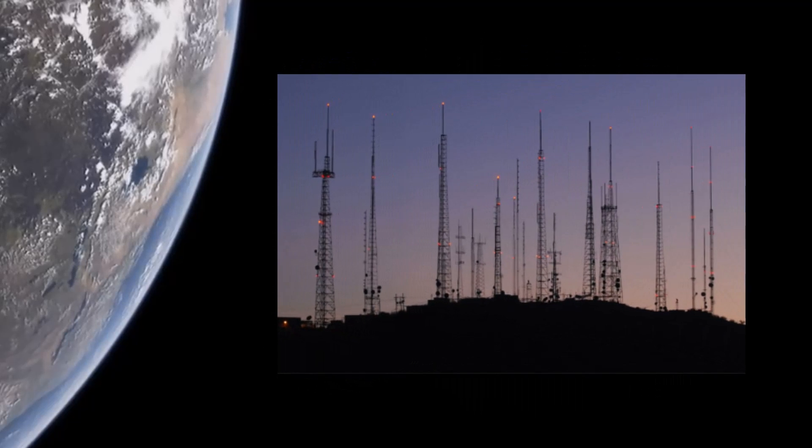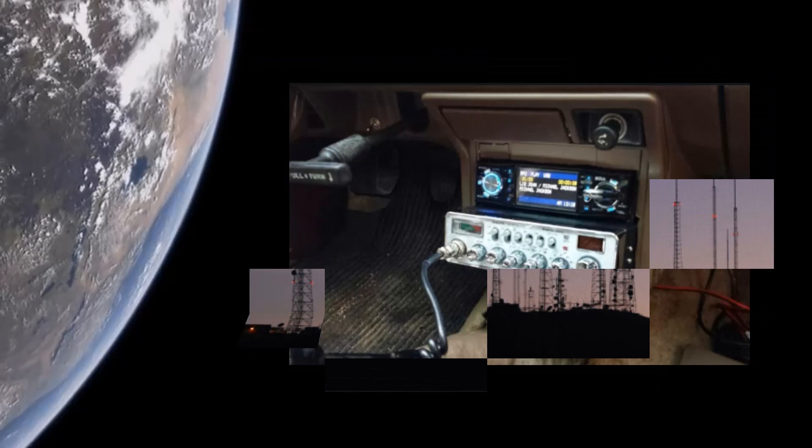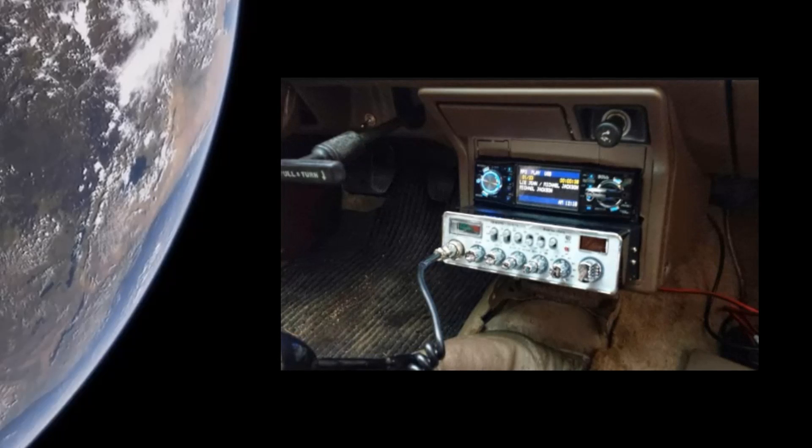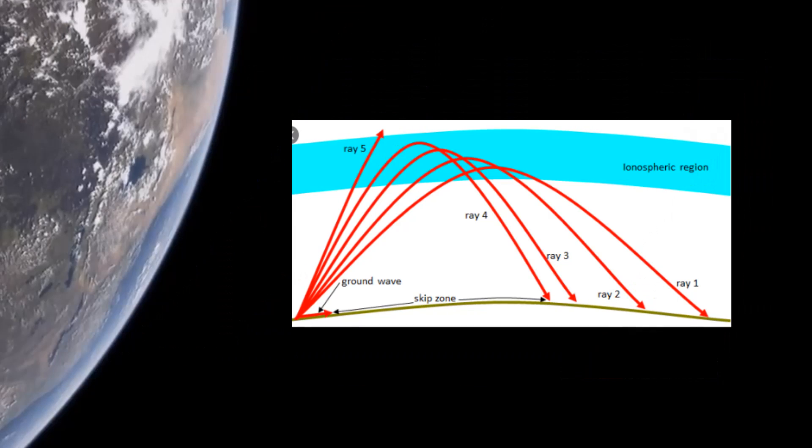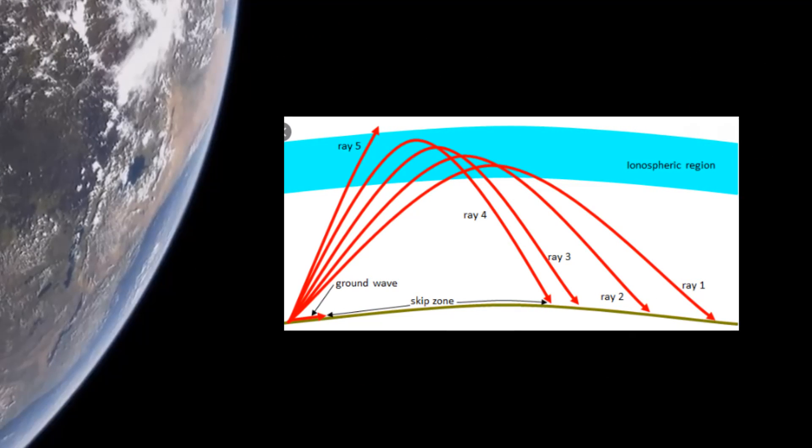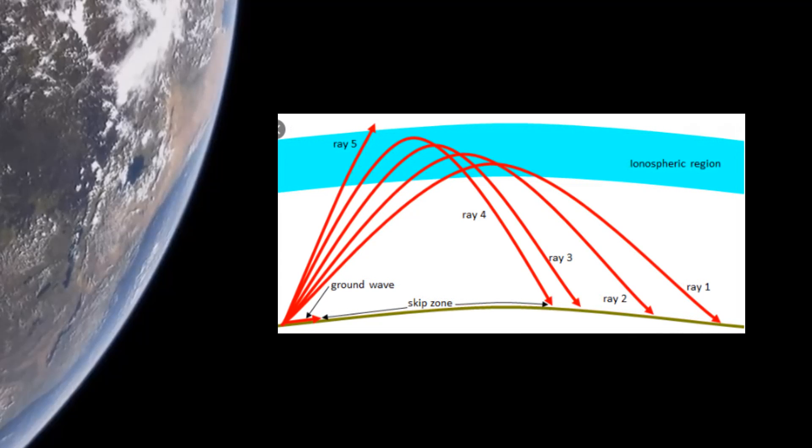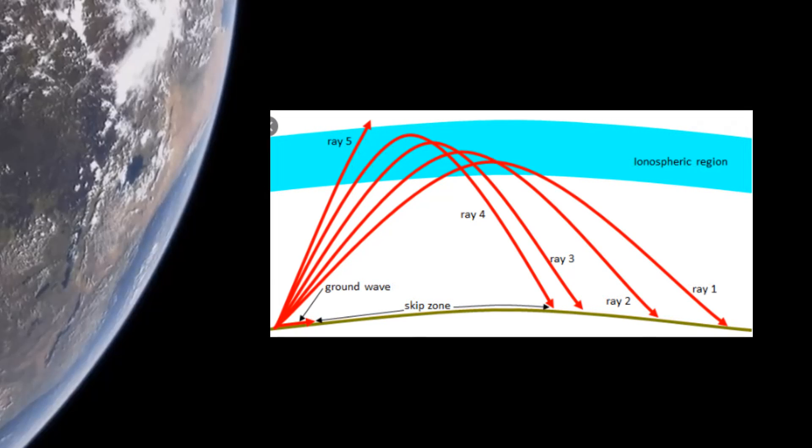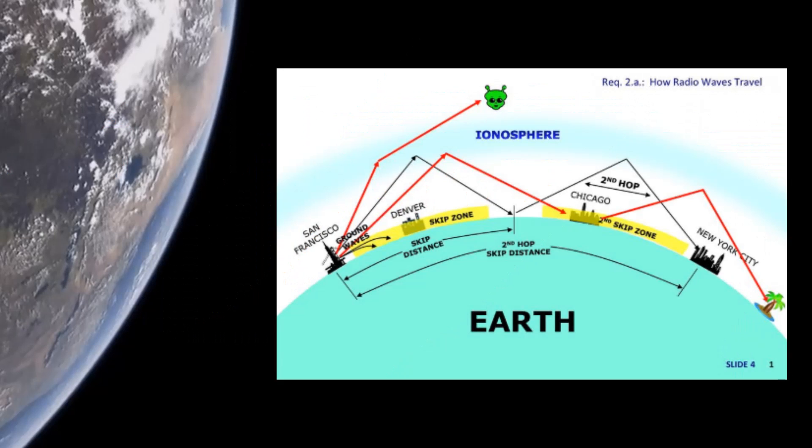Everybody is familiar with AM radio stations and how you can pick up certain things at night versus the day. Anybody familiar with CB radio and the 27 megahertz band knows that there are conditions called skip which allow these CB signals to be heard several states away. Every frequency spectrum, whether it's HF, VHF, UHF, microwave, all have their own propagation characteristics.